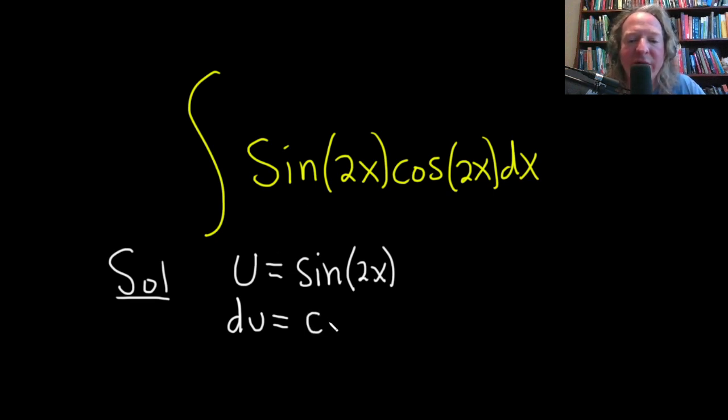So you take the derivative of the outside, which is the sine function, so cosine of 2x. Leave the inside untouched, and then times the derivative of the inside. Your inside function is 2x, its derivative is 2, and then we have dx.